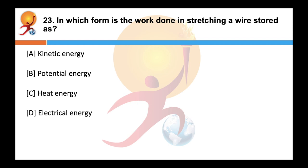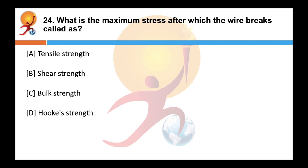In which form is the work done in stretching a wire stored? Correct answer is B — potential energy. Work done in stretching a wire is done against internal restoring forces, and this work is stored in the wire as elastic potential energy, also known as strain energy. What is the maximum stress after which the wire breaks called? Correct answer is tensile strength, also called breaking stress.